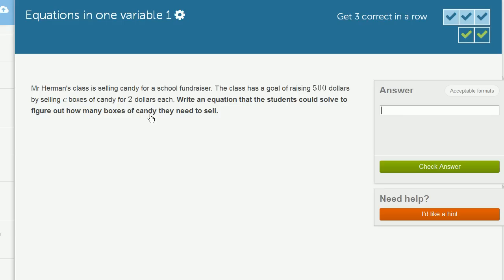So let's think about, in terms of C, how much money they would raise. So let's say they sell C boxes. For each box, they get $2. So the total amount they're going to get is 2 times C. Or we can even just write 2C right over there. So this is the total amount that they're going to raise in terms of C. Now, we know that the goal is to raise $500. So we want to figure out at what C does the total amount that they raise, does that equal 500? So this right here is the equation that the students could solve to figure out how many boxes of candy they need to sell.